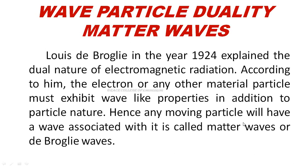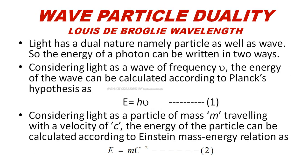Any particle moving along with the wave is called Matter Waves, or we can call it de Broglie Waves. Any moving particle will have a wave associated with it — this is called Matter Waves or de Broglie Waves. Louis de Broglie gave the length of that wave, called the Wavelength, known as de Broglie Wavelength.